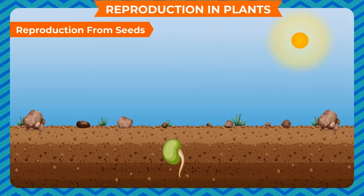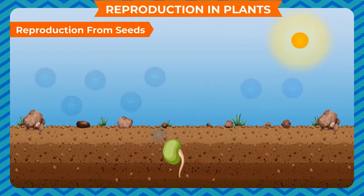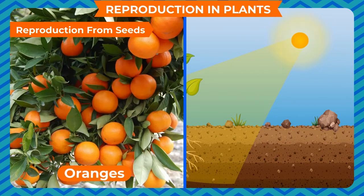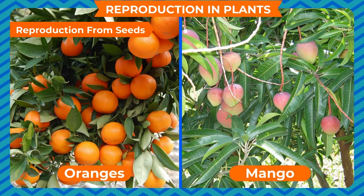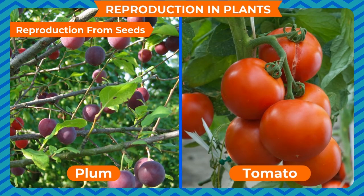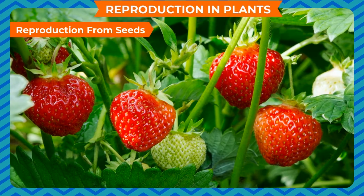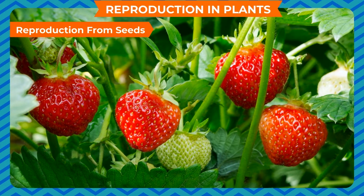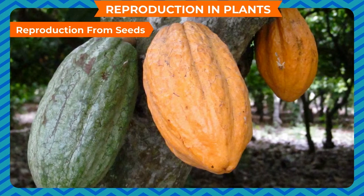Reproduction from seeds: most plants grow from seeds. These seeds are sown in soil and supplied with sufficient amounts of water, fertilizers, air, and sunlight to produce new plants. Examples of seed plants are oranges, mango, plum, tomato, etc. Most plants produce flowers that turn into fruits, mainly including fruits and vegetables.